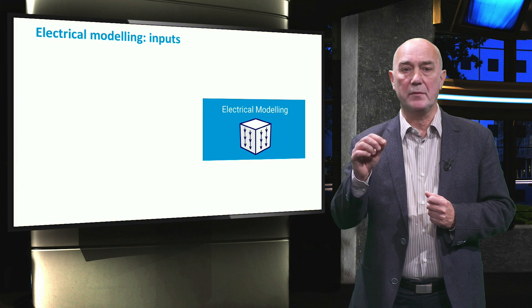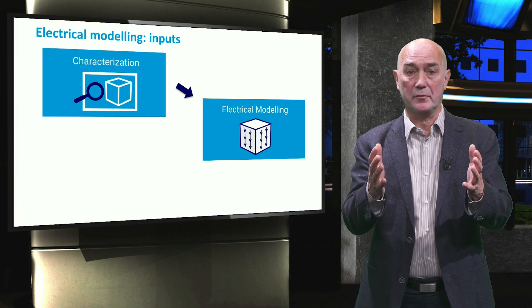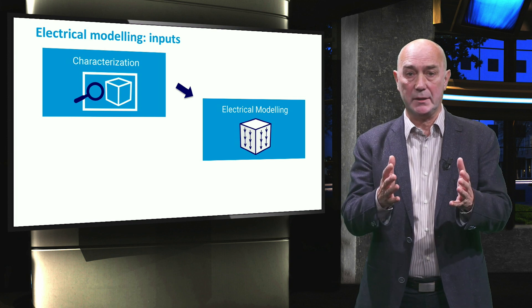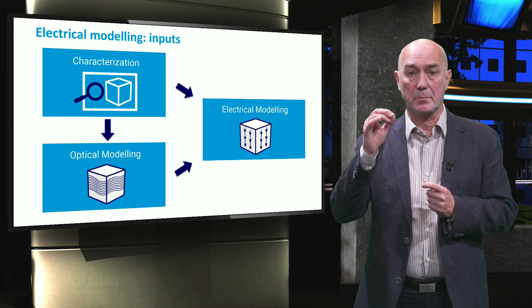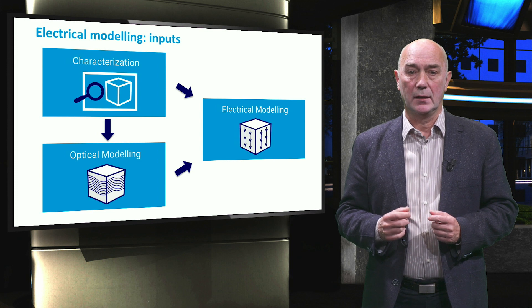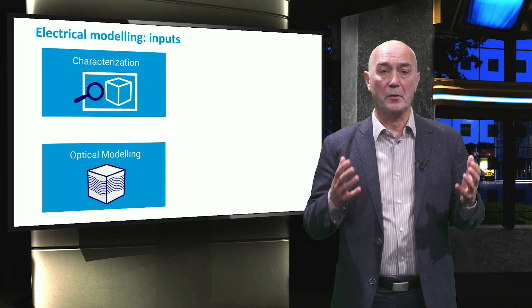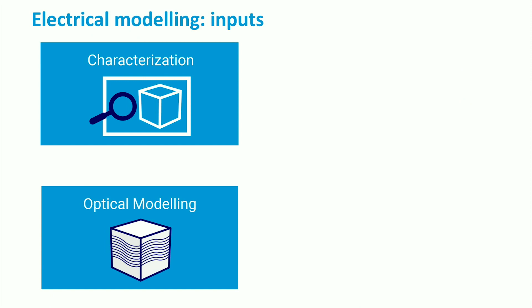The correct modeling of a PV device performance depends on the accurate characterization of materials and device properties and rigorous optical modeling to determine an absorption profile in the device under illumination. The calculated absorption profile determines where and how many charge carriers are generated within the device. This is described by the generation rate of charge carriers.